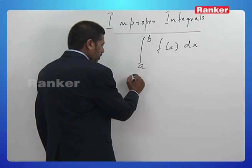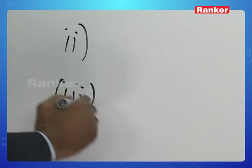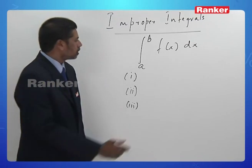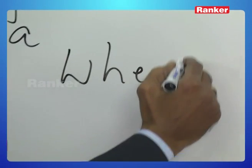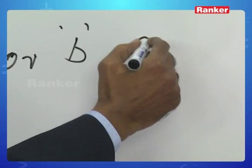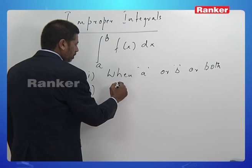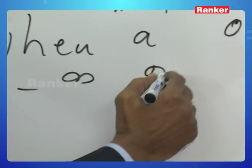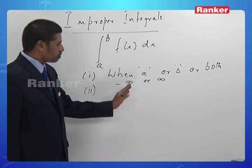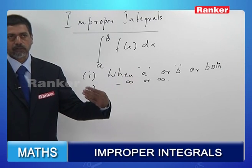Well, there are basically three types of improper integrals. Type 1 is when a or b are both minus infinity or infinity — that is, when a is minus infinity or b is infinity, or both. We call this a Type 1 improper integral.